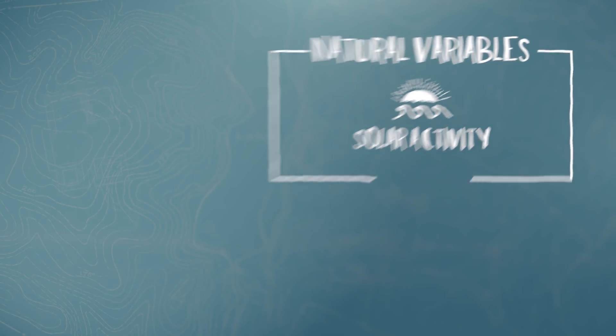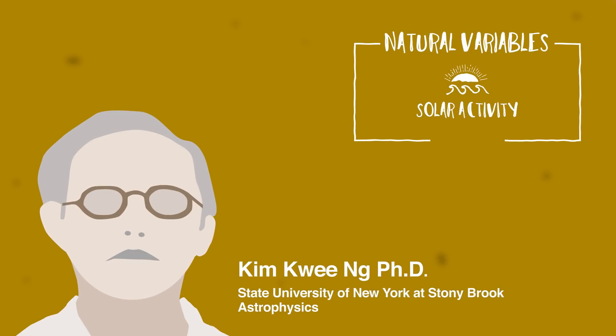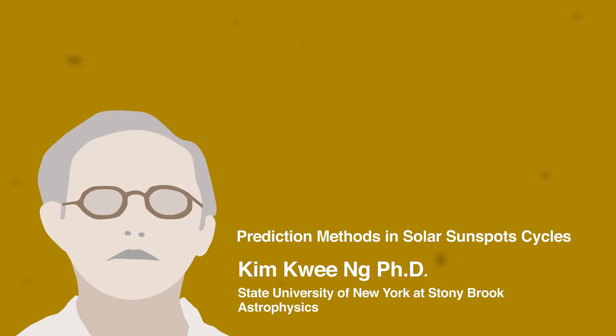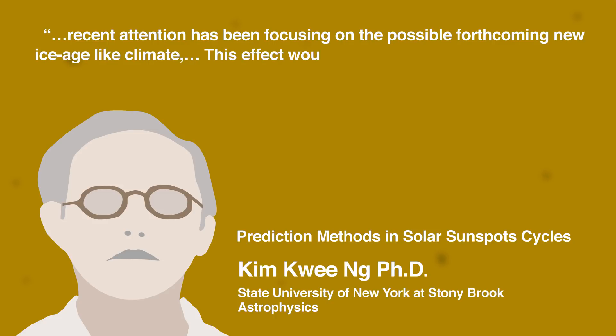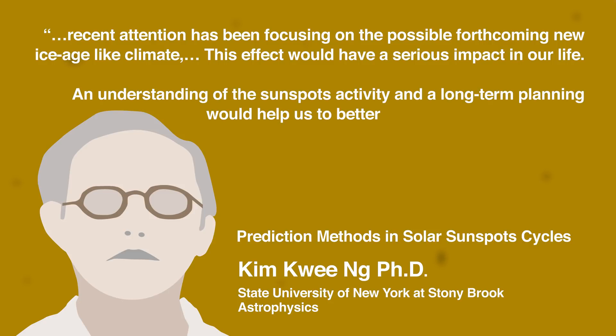Solar Activity. Sunspots and solar flares increase and decrease in activity. It has been observed that the Sun has an 11-year cycle, creating warming and cooling effects on our climate. The magnitude of this effect is still uncertain, but astrophysicist Dr. Kim Kui-ung from Stony Brook University wrote a journal in 2016 called Prediction Methods in Solar Sunspot Cycles, in which he states, recent attention has been focusing on the possible forthcoming new ice age-like climate. This effect would have a serious impact in our life. An understanding of the sunspot's activity and a long-term planning would help us to better prepare with the changes. It has been claimed that anthropogenic climate change has delayed the next ice age.